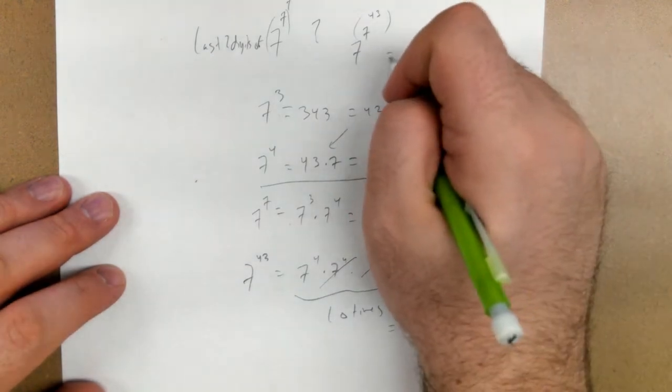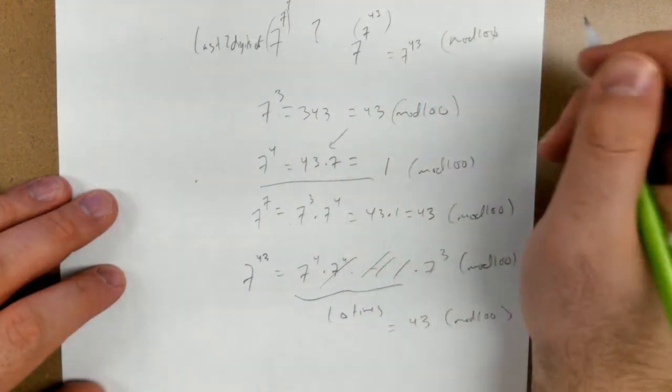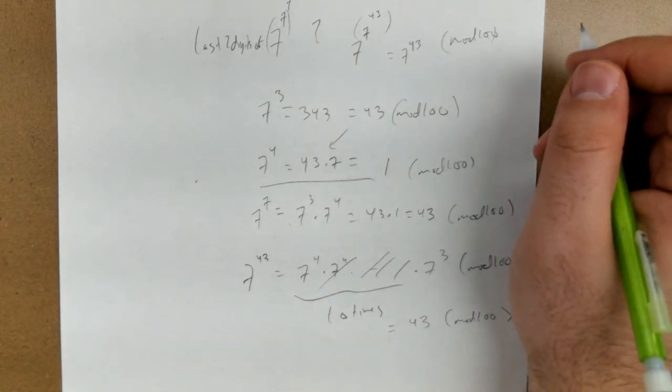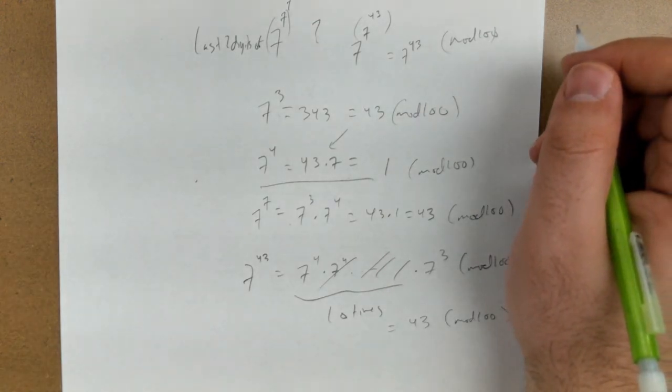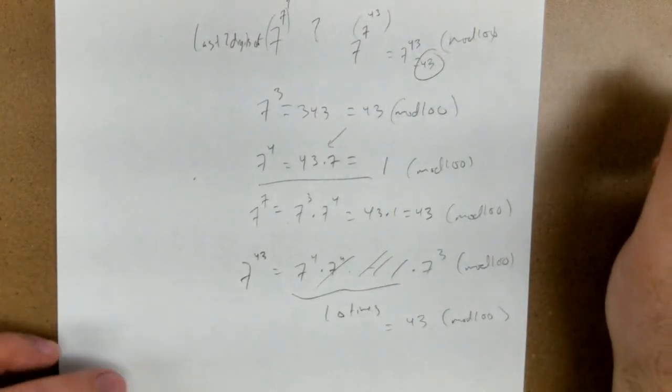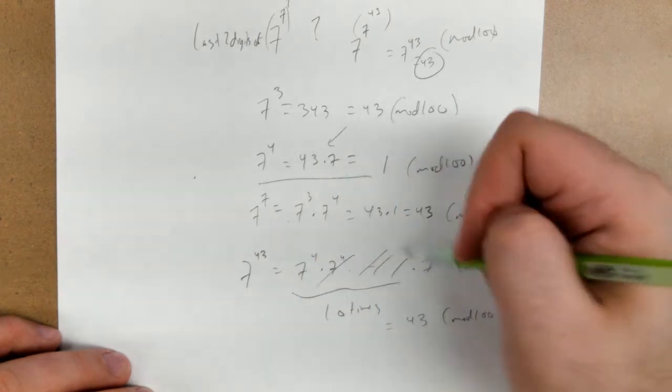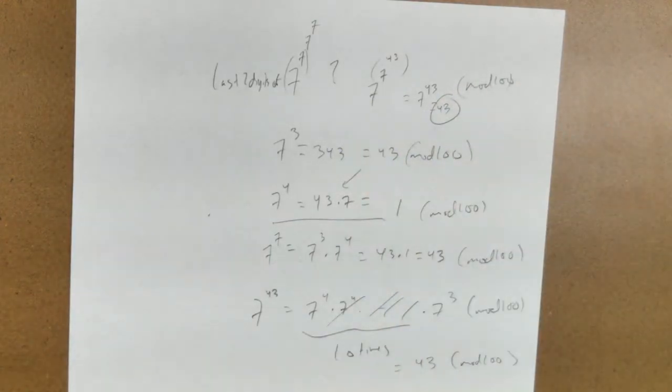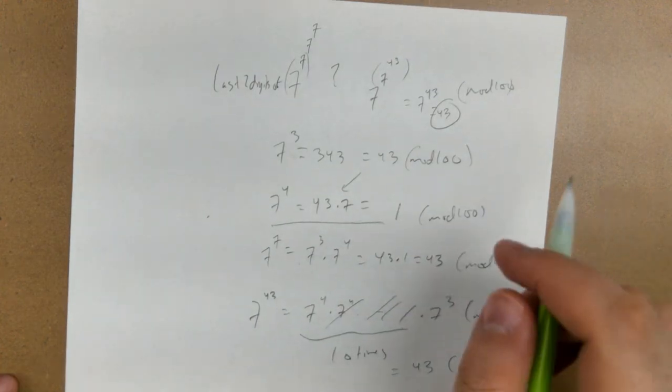This is equal to 7 to the 43, which we just did again. So using exactly what we just did, that should be 43. Because 7 to the 43 is exactly what we just did. So the last two digits, if you write this number out, are 43.